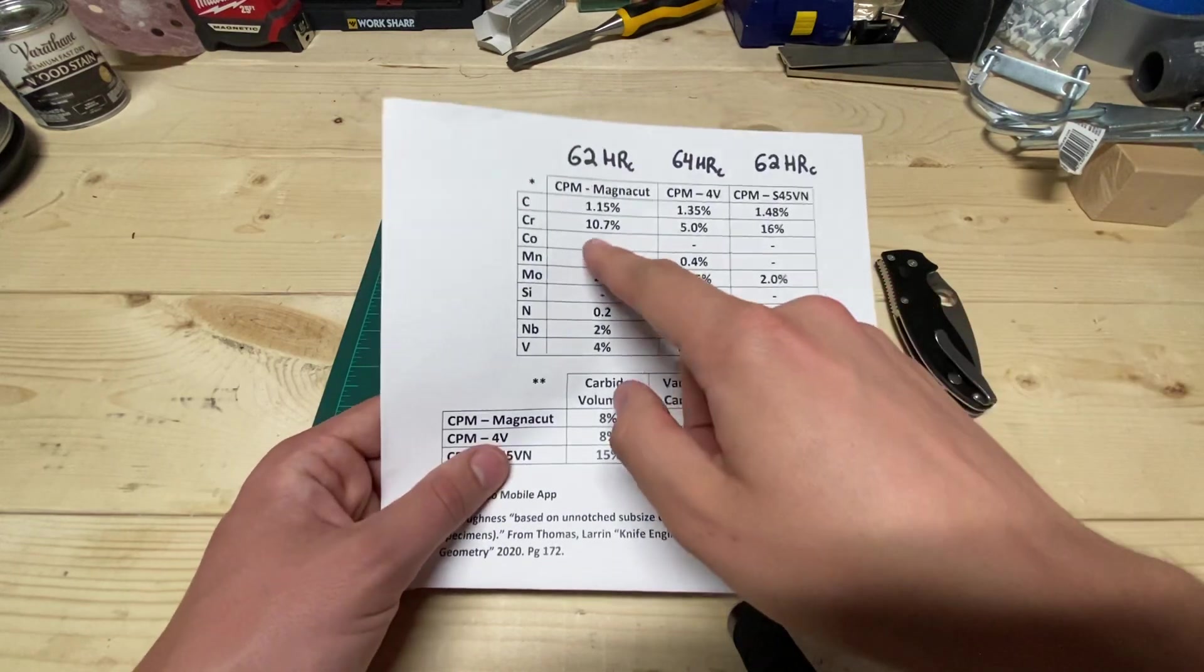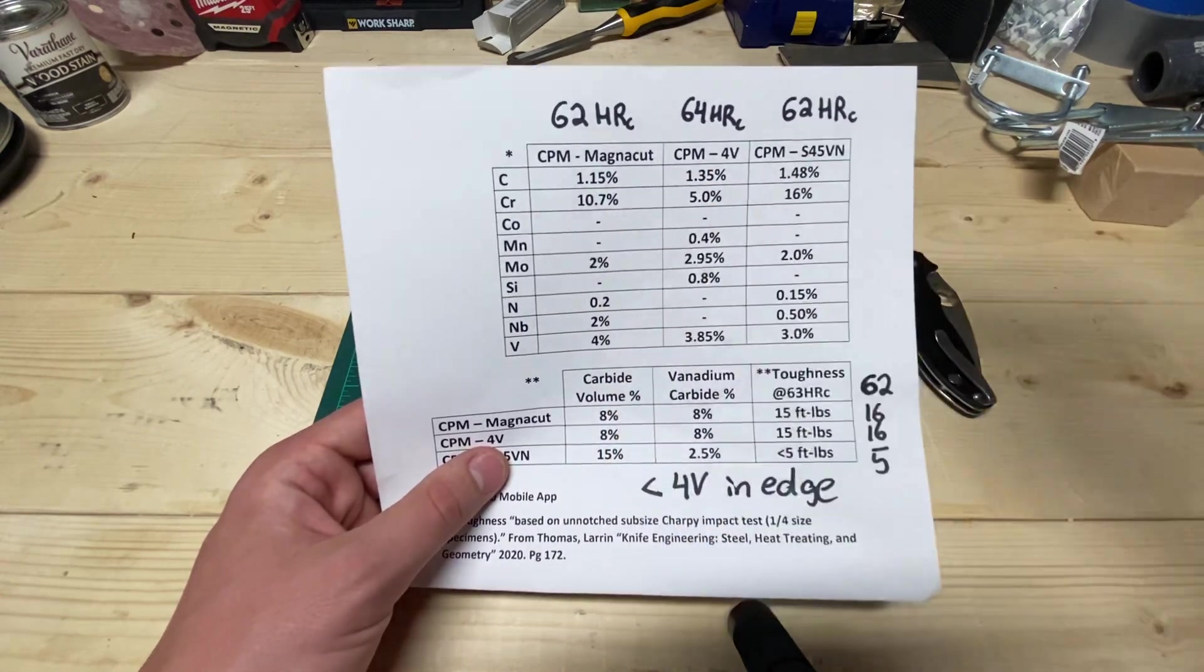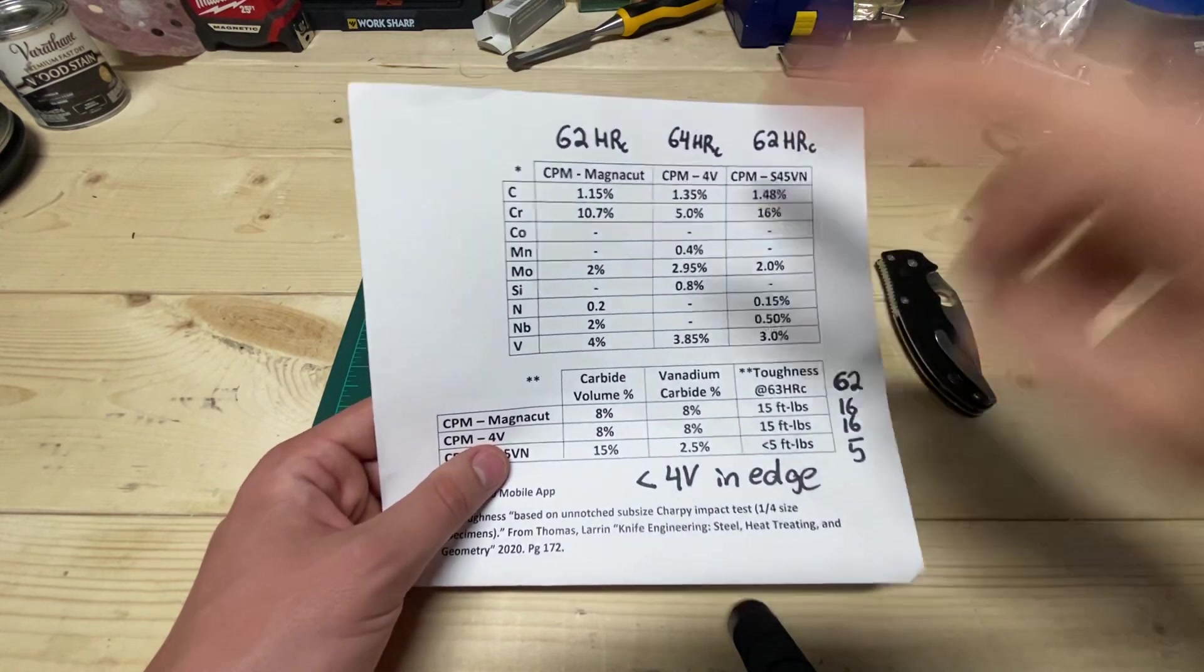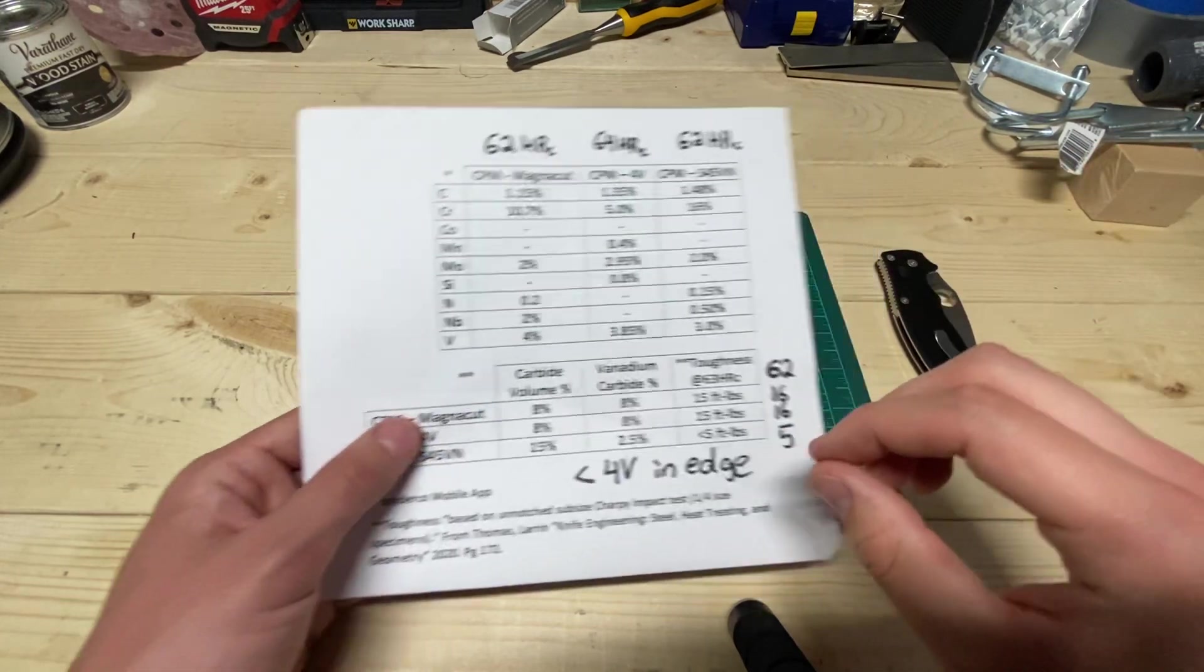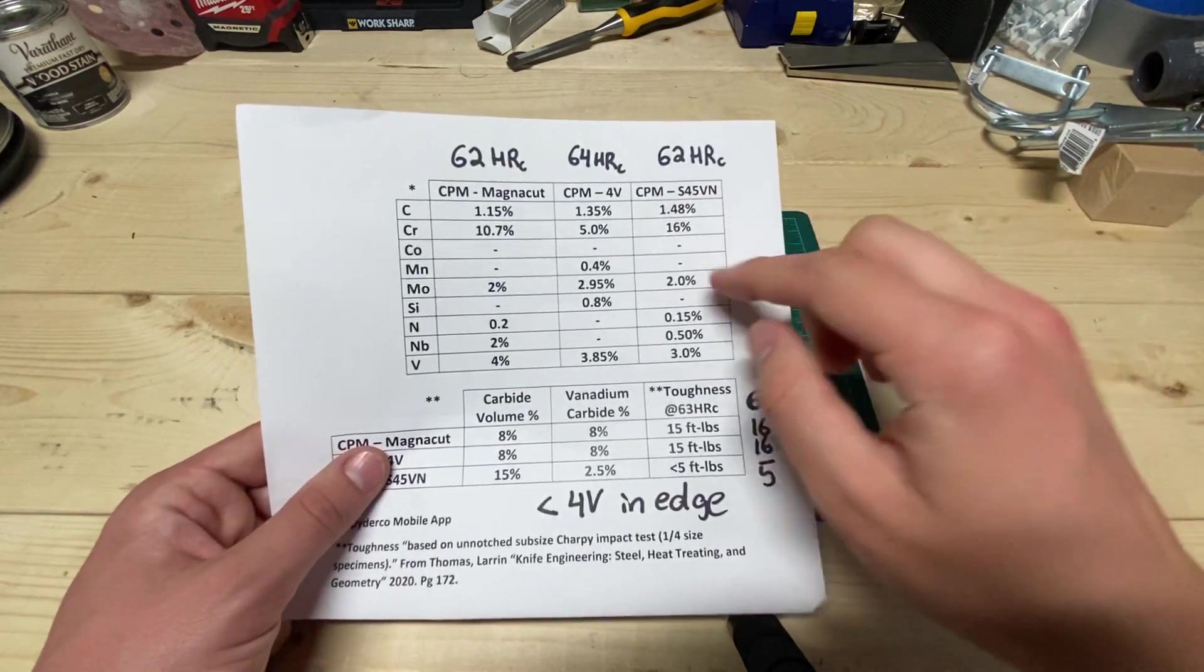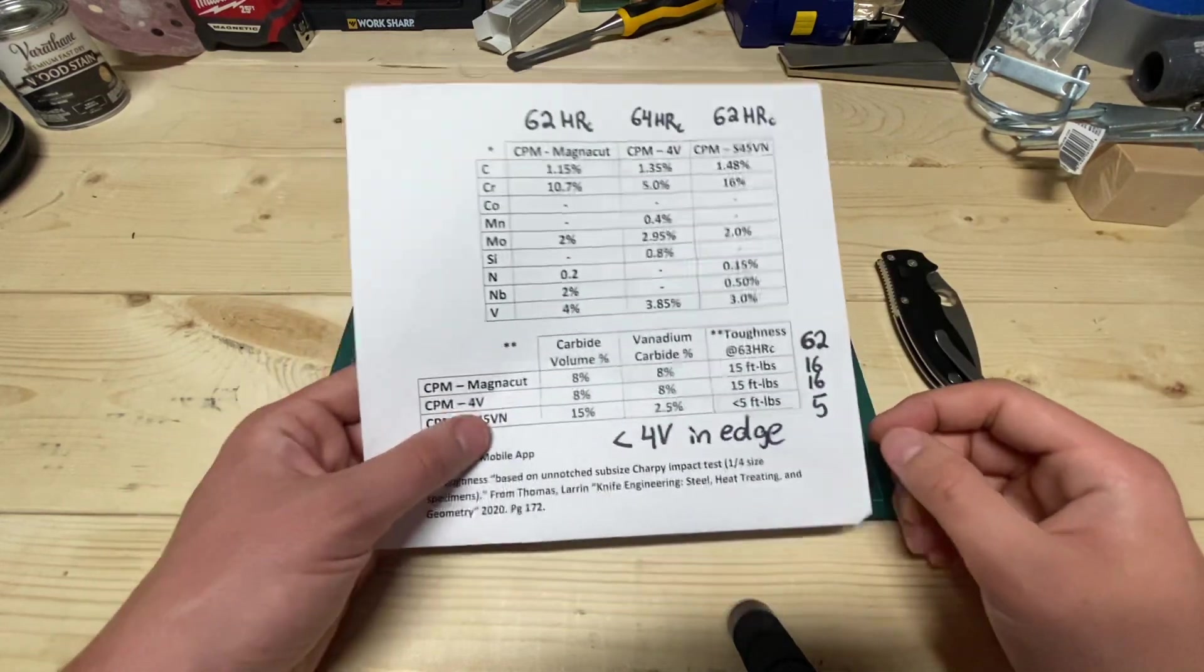And you'll notice right off the bat that this chromium content seems terribly low for a stainless steel, right? Well the trouble with a lot of stainless steels, and I've included S45VN over here, very stainless at 16% chromium.